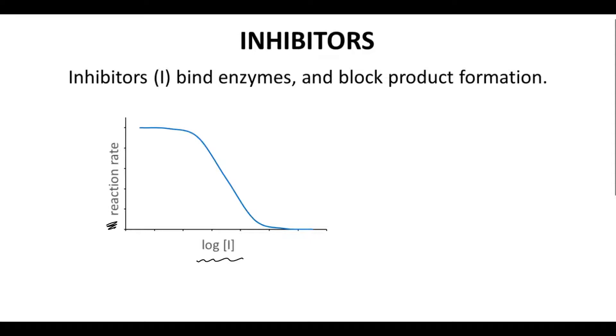At very low inhibitor concentration, the rate of the reaction is high, about 100%. At high inhibitor concentration, on the right, the rate is low, about 0%. In between these extremes, the curve of rate versus log I follows a sigmoidal curve.